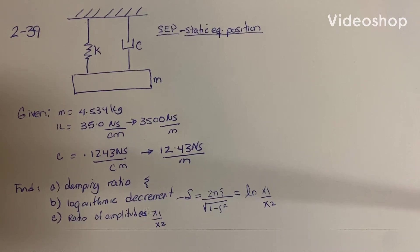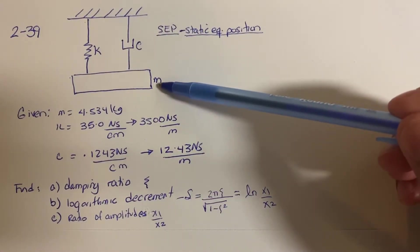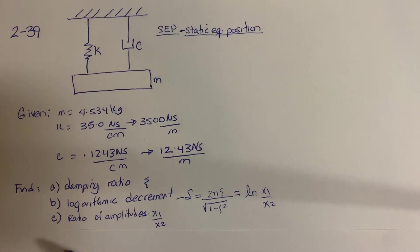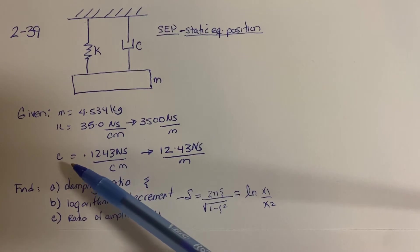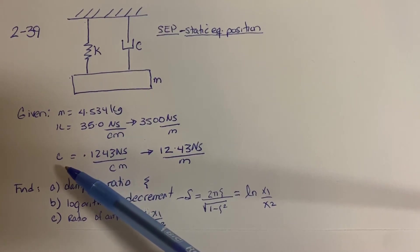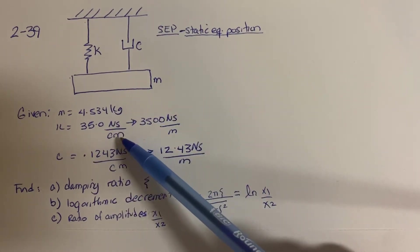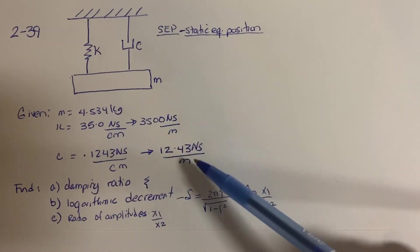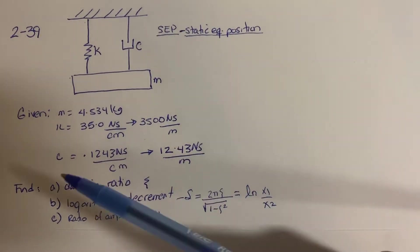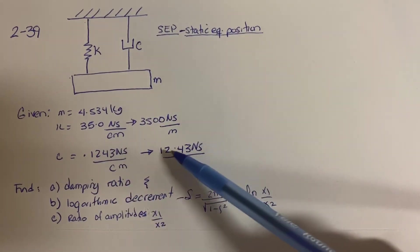This problem shows a vibration system composed of a spring and a dashpot with a mass m. The problem gives us data for the mass, the stiffness of the spring, and the damping coefficient. Notice that the stiffness is expressed in centimeters as well as the damping coefficient, so we need to convert these to meters. So now k will be 3,500 and the damping coefficient will be 12.43.